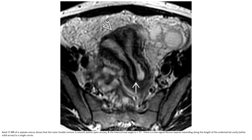This is a T2 MRI of a septate uterus. The outer fundal contour is smooth and the inner contour angle is less than 75 degrees. There is a low-signal fibrous septum extending along the length of the endometrial cavity to a single cervix.